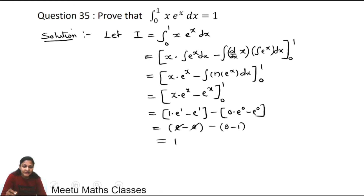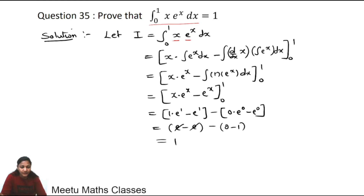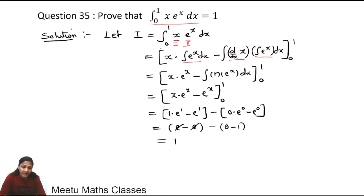Question Number 35: prove that ∫₀¹ x·eˣ dx = 1. Consider the left-hand side. We have the product of two functions, so we use integration by parts. The algebraic function x is the first function and the exponential eˣ is the second function. By parts: x·eˣ − ∫1·eˣ dx, with limits 0 to 1.